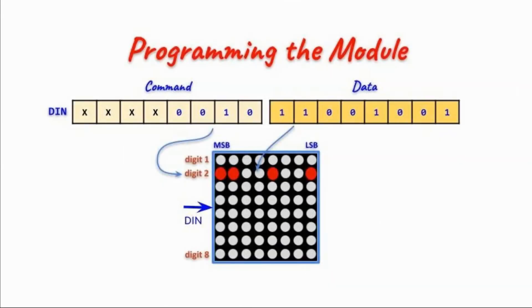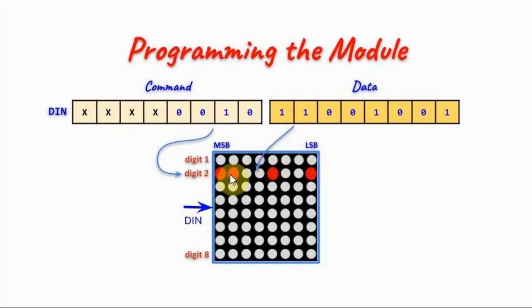The module is programmed by sending two bytes — the command byte and the data byte — via the data-in line. The command byte determines which digit is addressed. We have digits 1 through 8, and the data byte determines the 8-bit value on the digit, with the most significant bit and least significant bit defined accordingly.